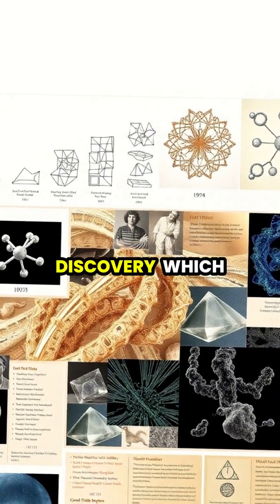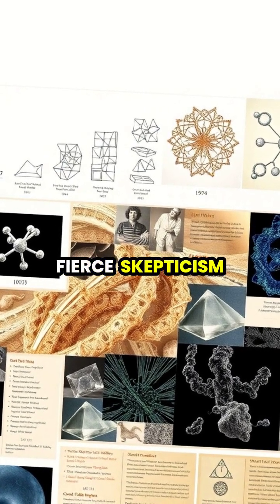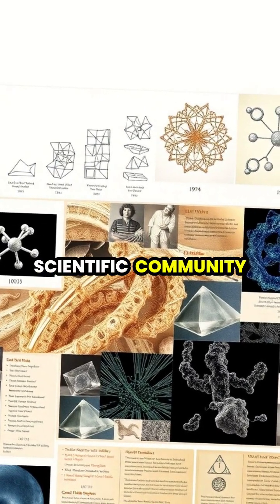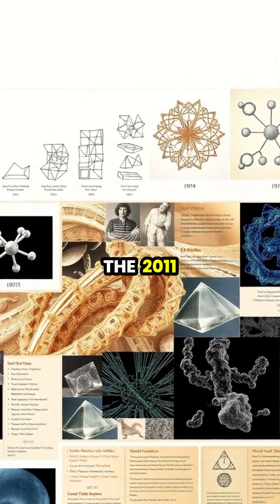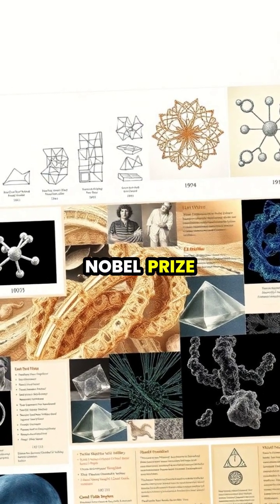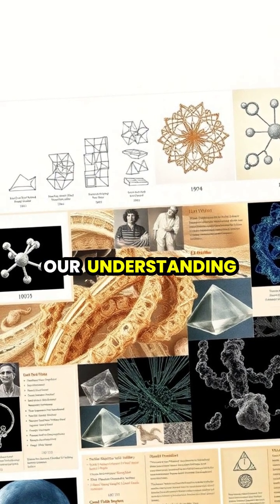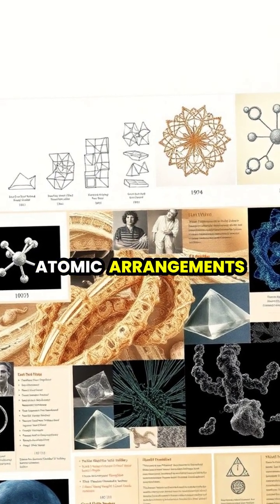Schechtman's revolutionary discovery, which initially faced fierce skepticism from the scientific community, earned him the 2011 Nobel Prize in Chemistry for forever changing our understanding of matter's atomic arrangements.